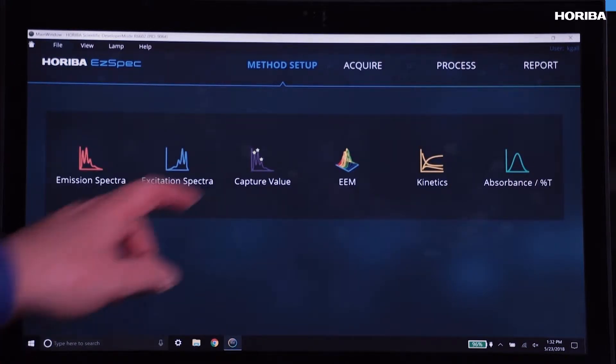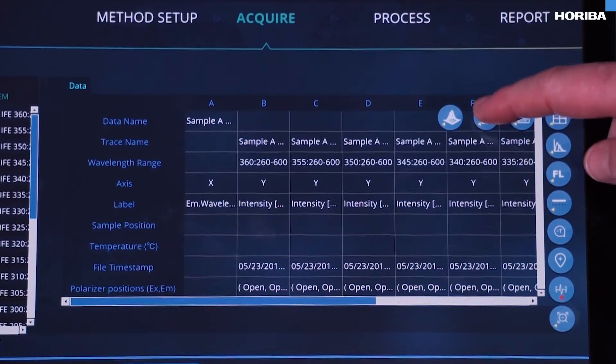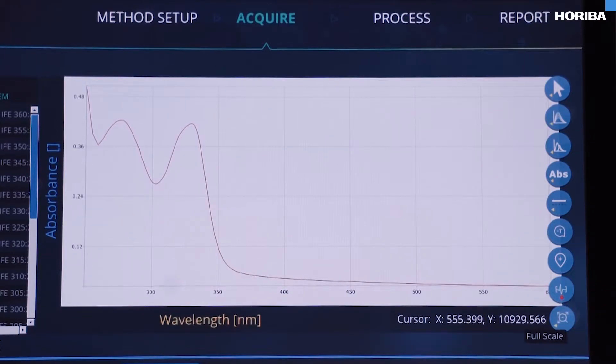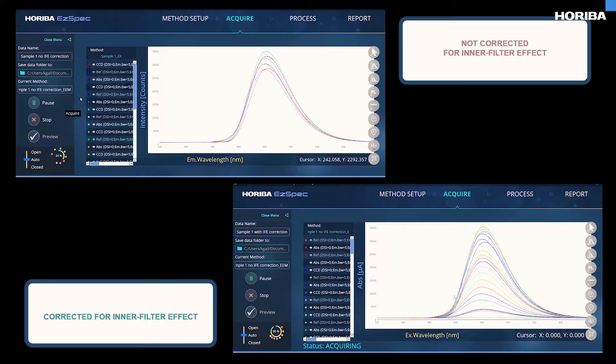The fluorescence absorbance dual nature of the Duetta is unique. You no longer need two instruments in the lab. And now we can correct the fluorescence dataset for the inner filter effect, the IFE, to give a truer molecular fingerprint independent of concentration.